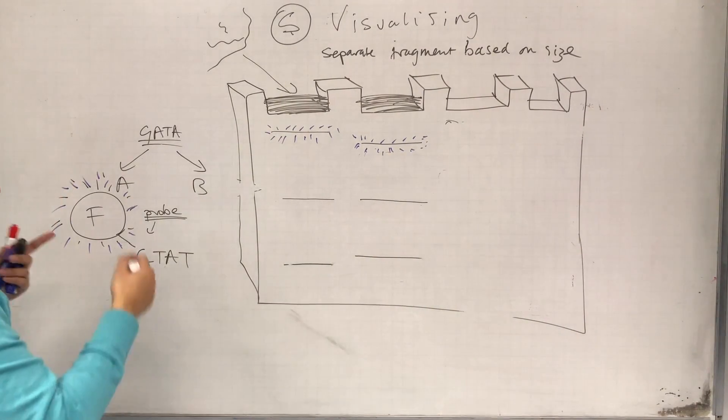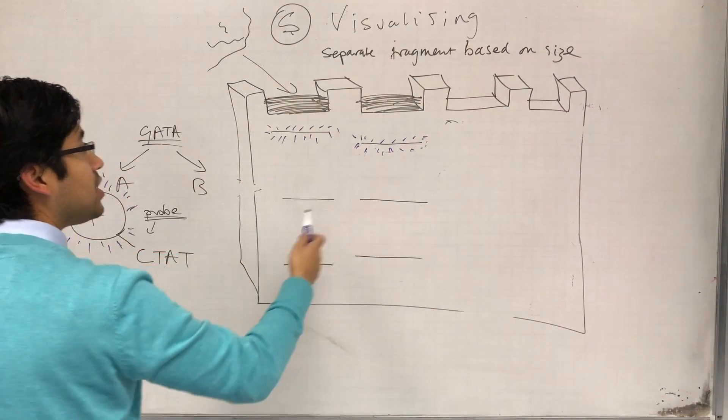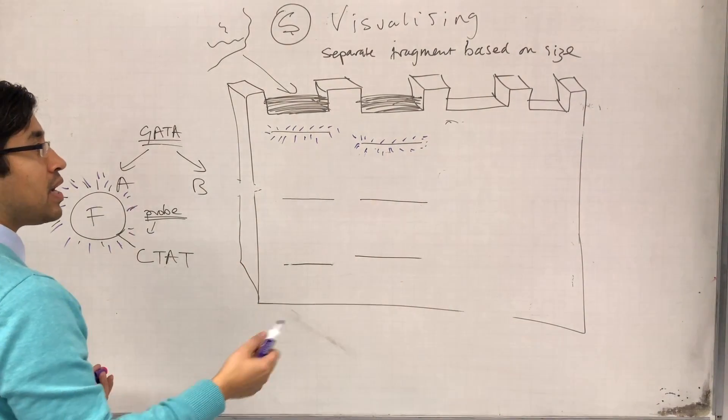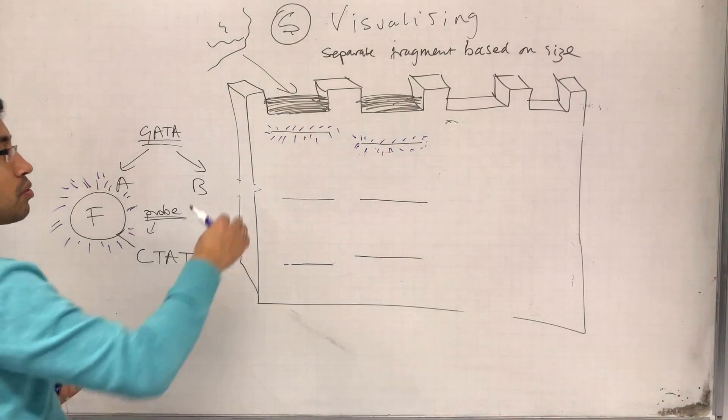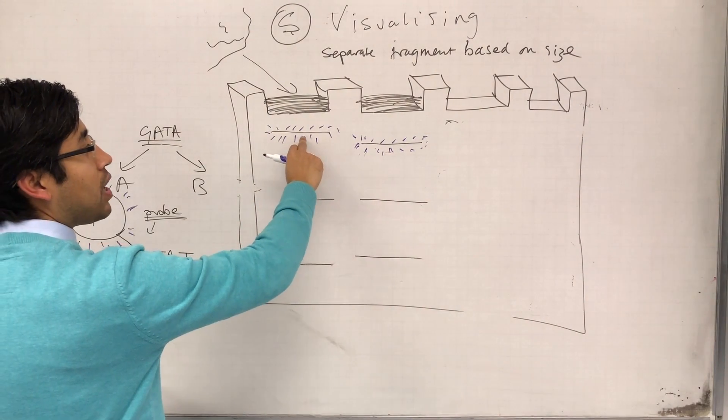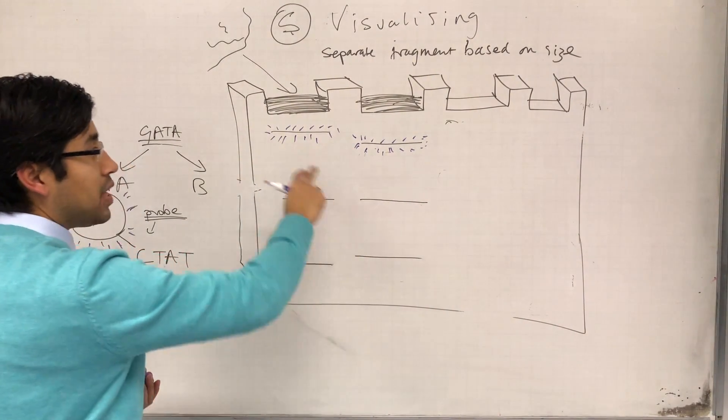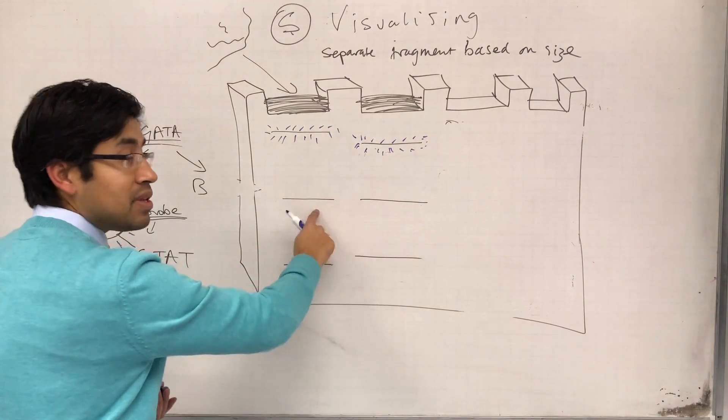Now, one STR position is not usually a good indicator of being unique. So I can compare this STR in two different people. And they could be different, but they could equally be the same.